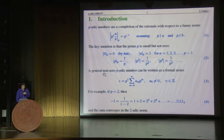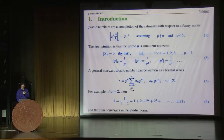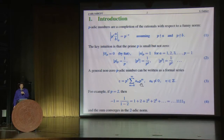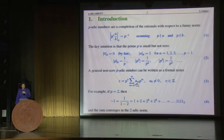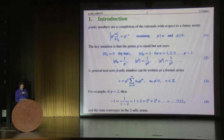Any general non-zero p-adic number can be written as a formal series of this form. It looks funny, because I'm running the series to arbitrarily large positive powers of P, but that's okay in a p-adic sense, because positive powers of P become p-adically small. So this sum converges, provided the so-called digits A sub m are bounded — in fact, we can choose them all to be 0, 1, 2, 3, up to P minus 1.